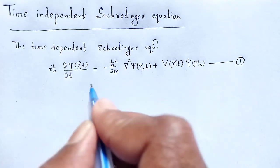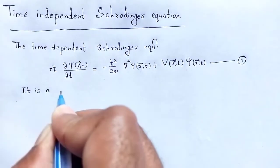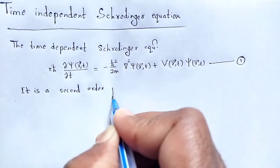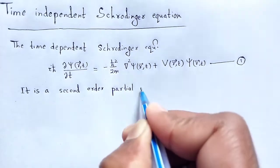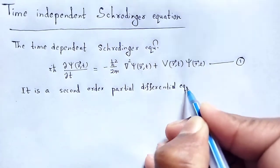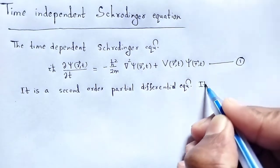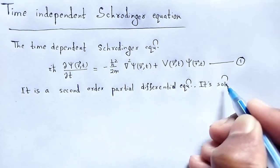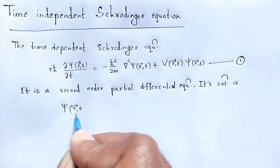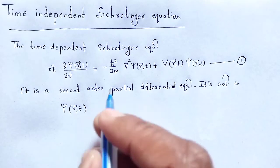This differential equation is a second-order partial differential equation. Its solution is ψ(R,T), which is a function of both R and T.